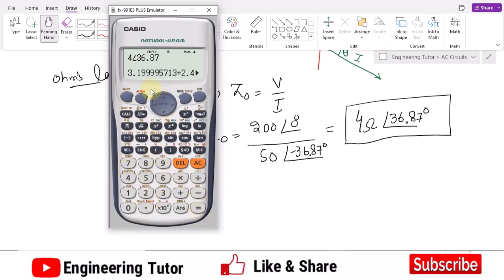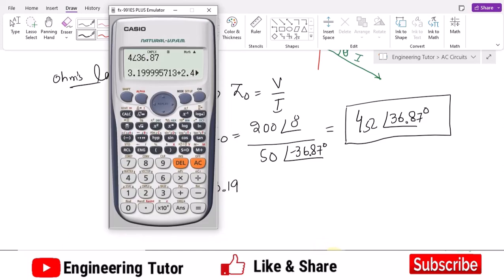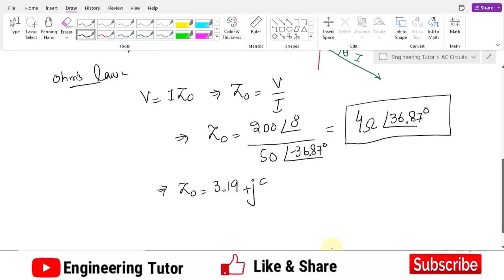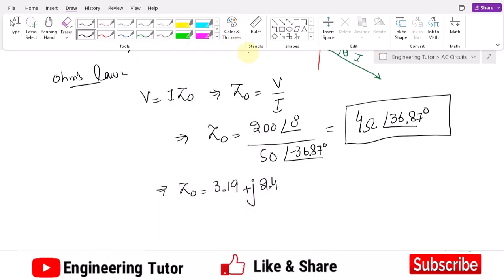That is the direct form. I already selected it to convert it into rectangular form. So it would be 3.19. Let me write it. Z naught is now 3.19 plus j2.4. That is the impedance where this is the real term which shows the resistance, while this is the reactance of my load.